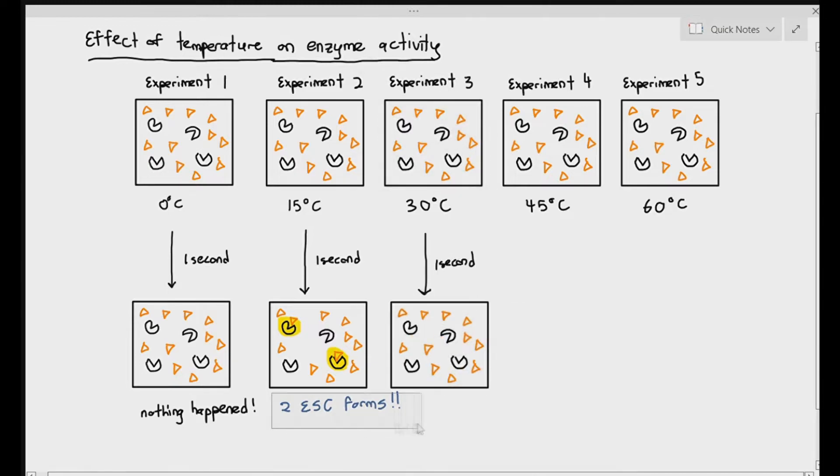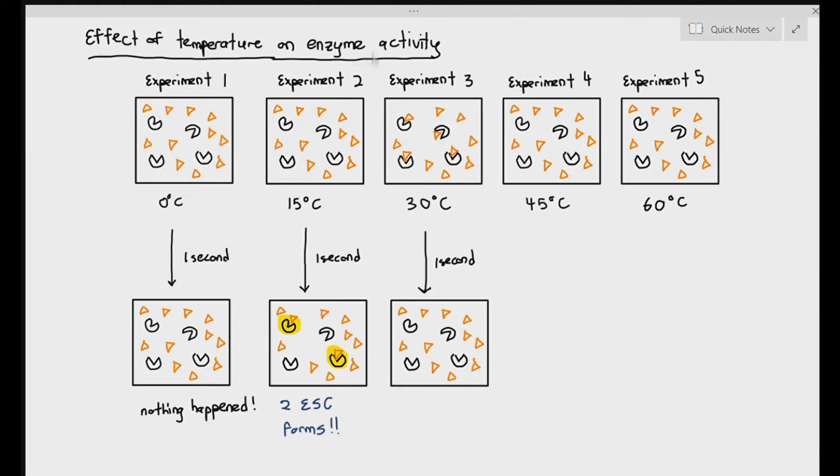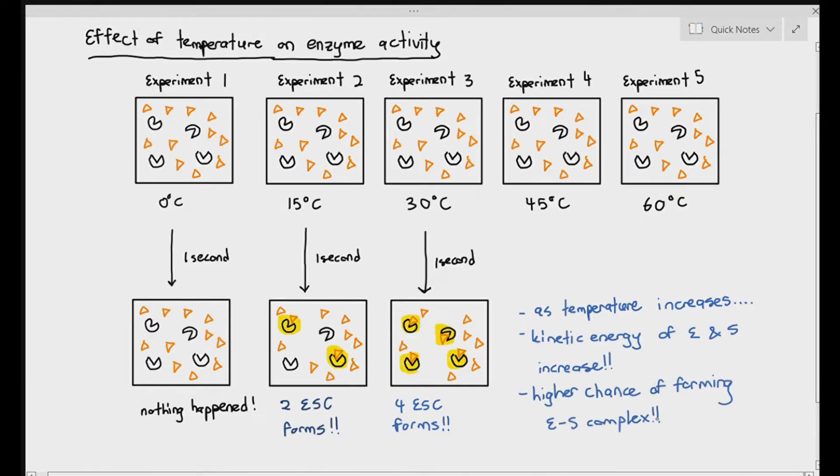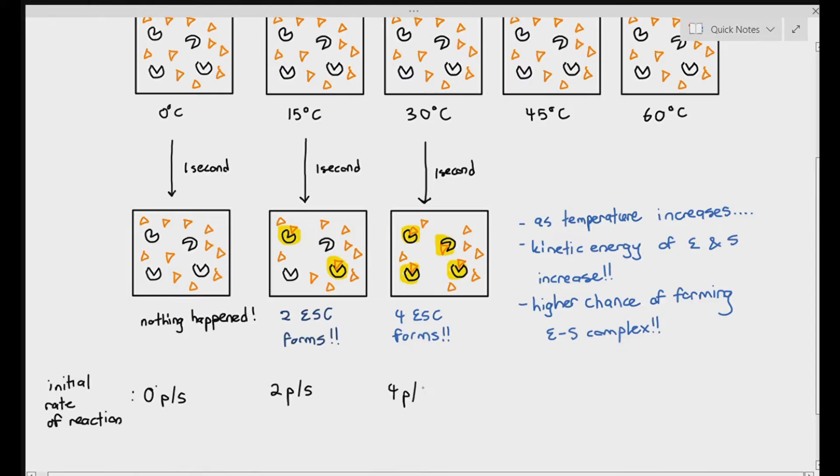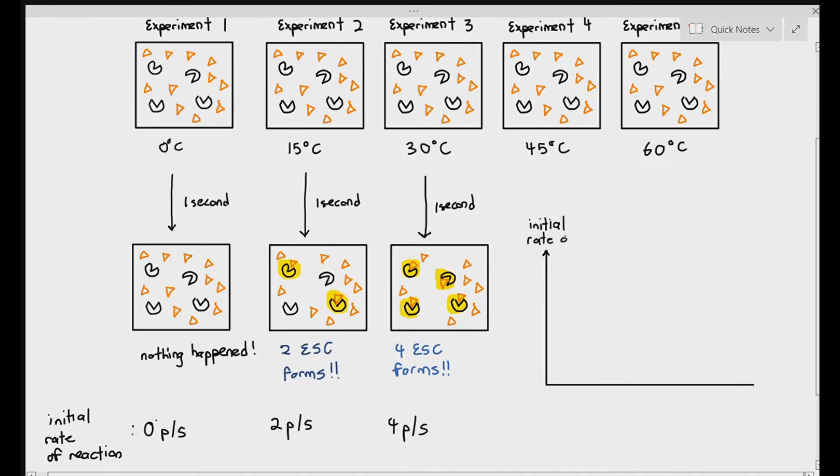At 30 degrees Celsius, probably what might have happened is, in experiment three, there were four ES complexes formed. So as temperature increased, the kinetic energy of the enzymes and substrates also increased even more, so there's an even higher chance of forming the ES complex at the same period of time, one second. So as you increase the temperature, the initial rate of reaction increases. When we plot the graph of initial rate of reaction against temperature, we can see that as temperature increases, the initial rate of reaction goes up.